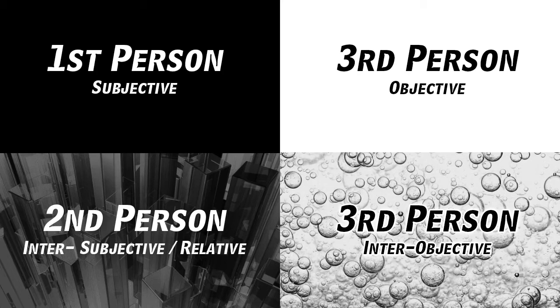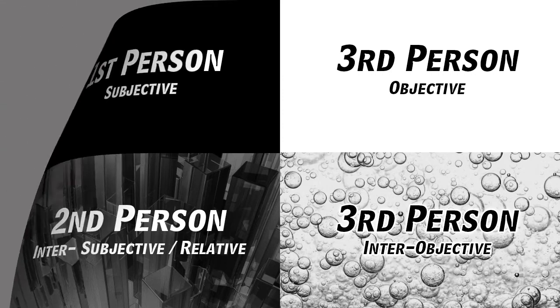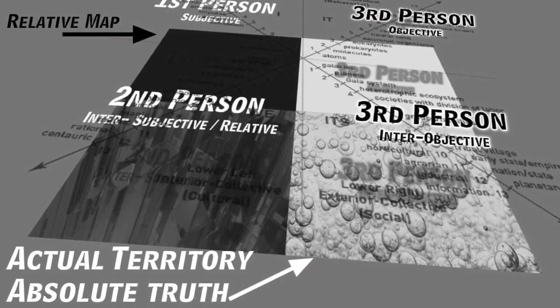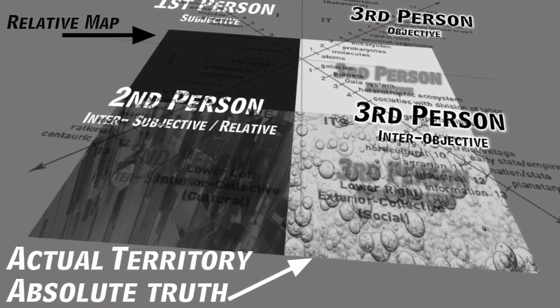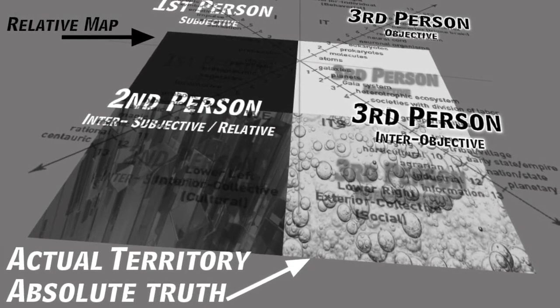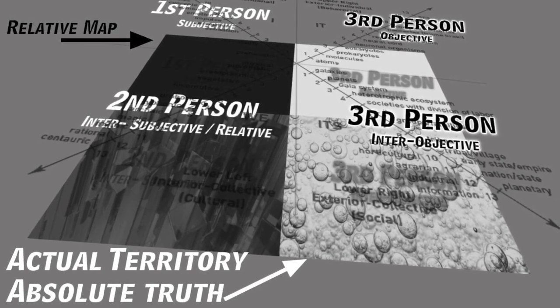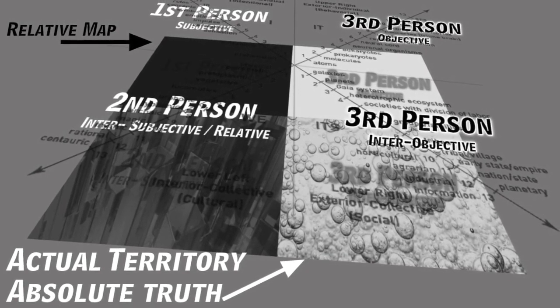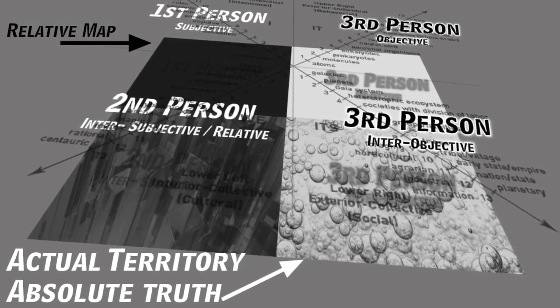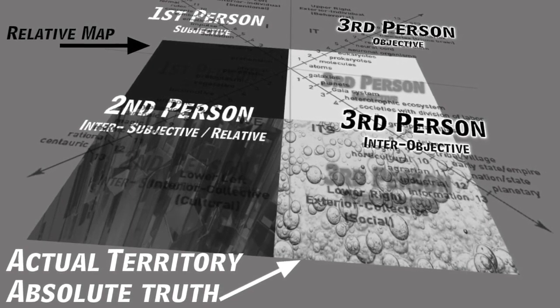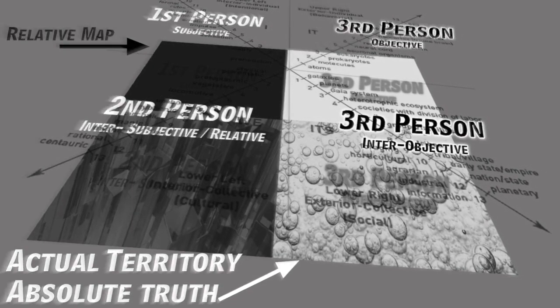You can take all of this a step further still and expand upwards and notice that the map is not the territory, and that all of our ways of talking about things are relative — in relative human language — and it's not the thing in itself, which is the absolute truth. And there's absolute truth in all four quadrants.